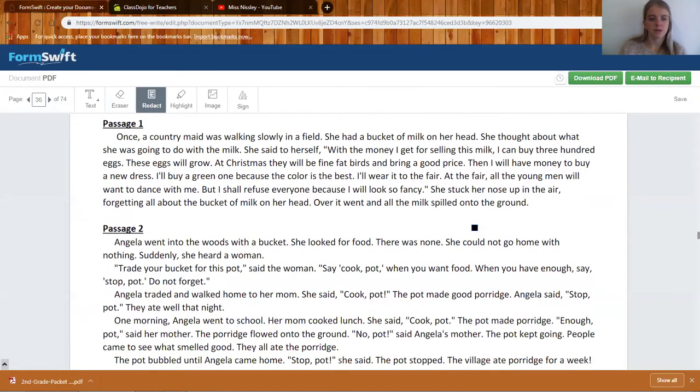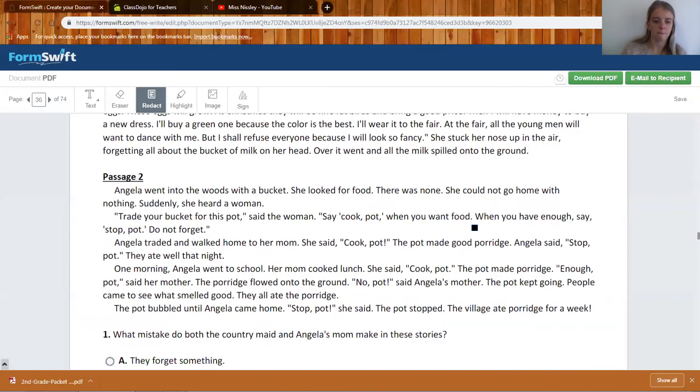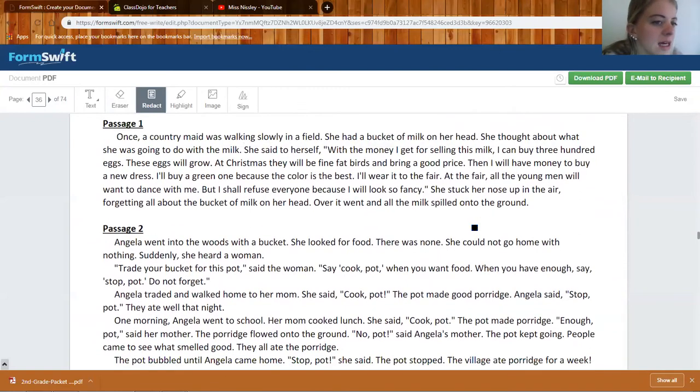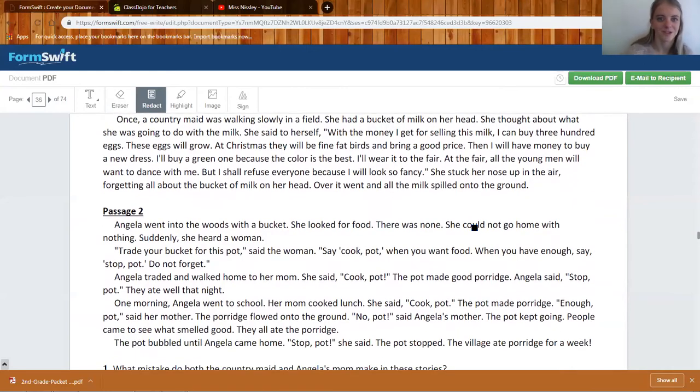Once a country maid was walking slowly in a field. She had a bucket of milk on her head. She thought about what she was going to do with the milk. She said to herself with the money I get for selling this milk I can buy 300 eggs. These eggs will grow. At Christmas they will be fine fat birds and bring a good price. Then I will give the money to buy a new dress. I'll buy a green one because the color is the best. I'll wear it to the fair. At the fair all the young men will want to dance with me. But I shall refuse everyone because I will look so fancy. She stuck her nose up in the air forgetting all about the bucket of milk on her head. Over it went and the milk spilled onto the ground. My gosh what a silly story.